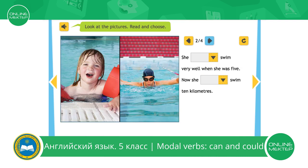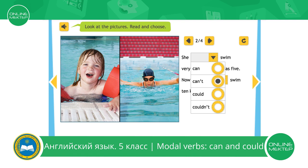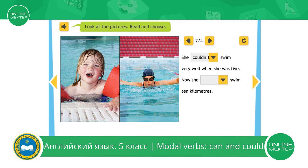Next. Look at these two pictures. First picture. She swam very well when she was five. She can, can't, could, couldn't. Look at the picture carefully. The girl needs some help to swim. So she couldn't swim. She couldn't swim very well when she was five.